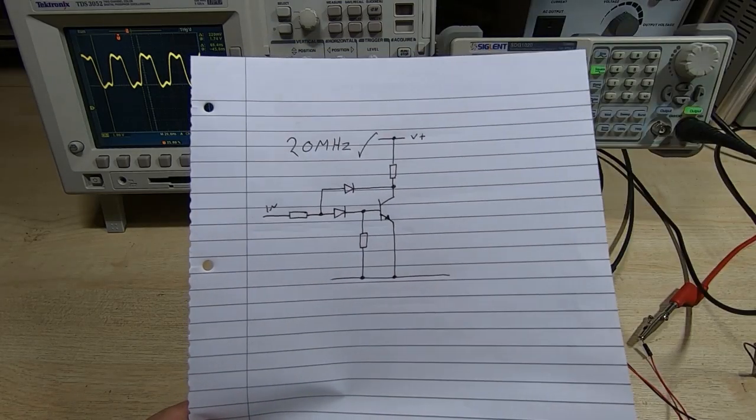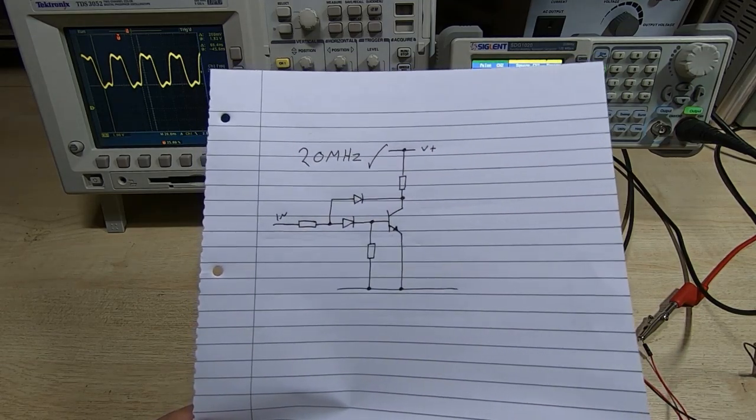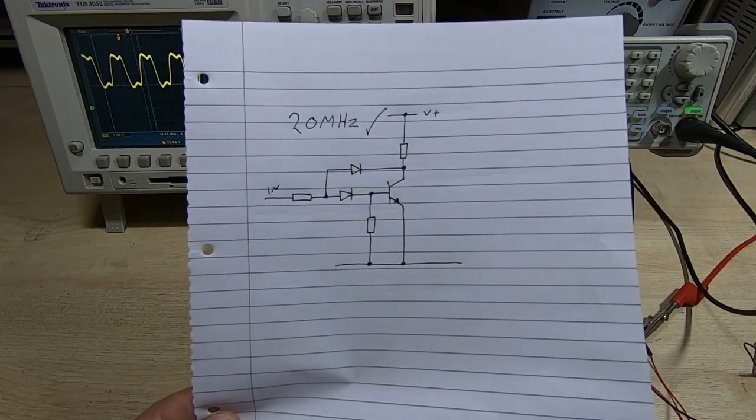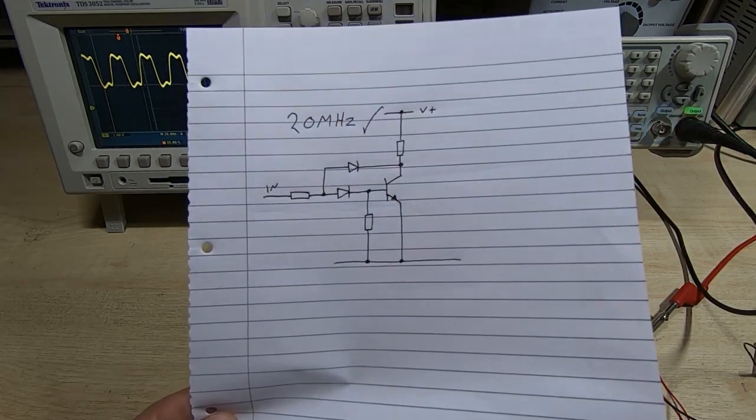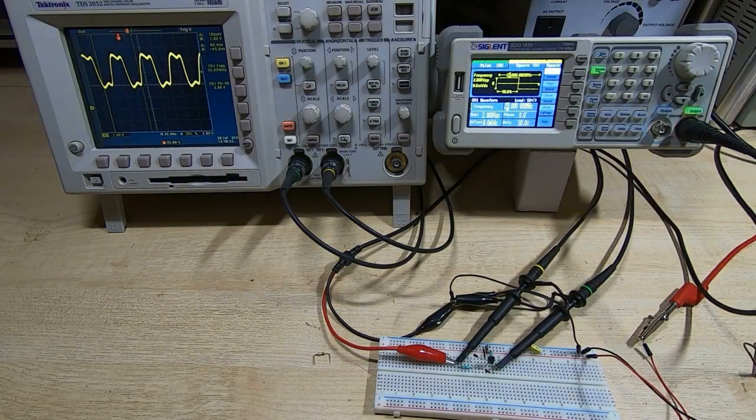And this circuit will actually operate well beyond this frequency if we wanted it to. So hopefully that explains, firstly, why I didn't design the processor to run at very high speed.